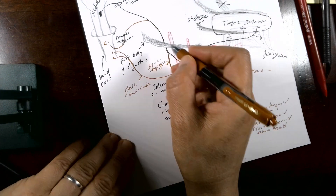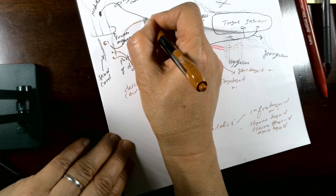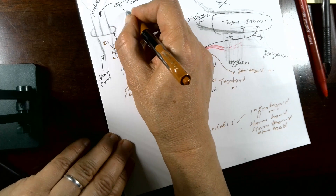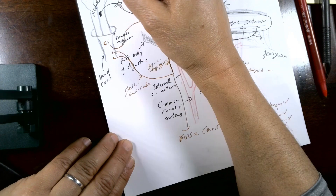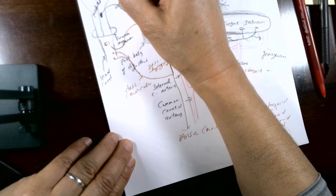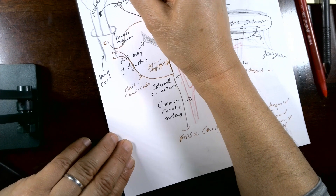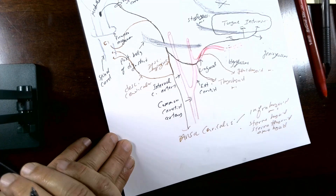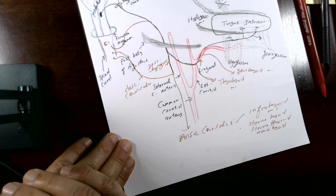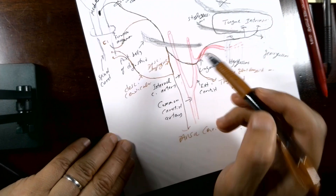The final branch from C1 is called the retrograde branch, which ascends and goes to the meningeal covering in the posterior cranial fossa. This branch is sensory to the meninges in the posterior cranial fossa. This illustrates the intimate relation between the cervical nerves and the hypoglossal nerve.